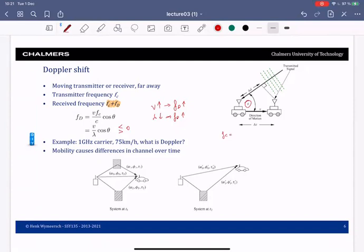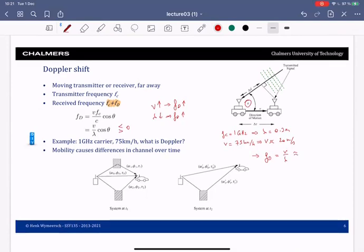So we recall that when the carrier is 1 gigahertz, this implies that lambda is 0.3 meter. When v is equal to 75 kilometer per hour, this implies that v is approximately 20 meter per second as you can do yourself. Then it follows that f_d, which is v over lambda at most (it can be smaller depending on the angle), will be approximately, very rough, 60 hertz. It's 20 meter per second over 0.3 meter, so about 60 hertz.